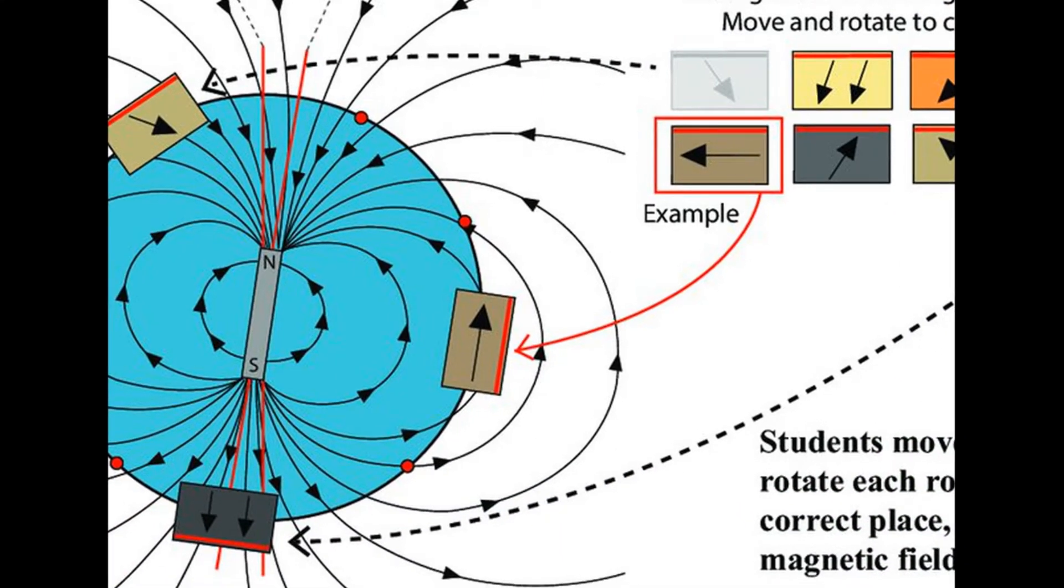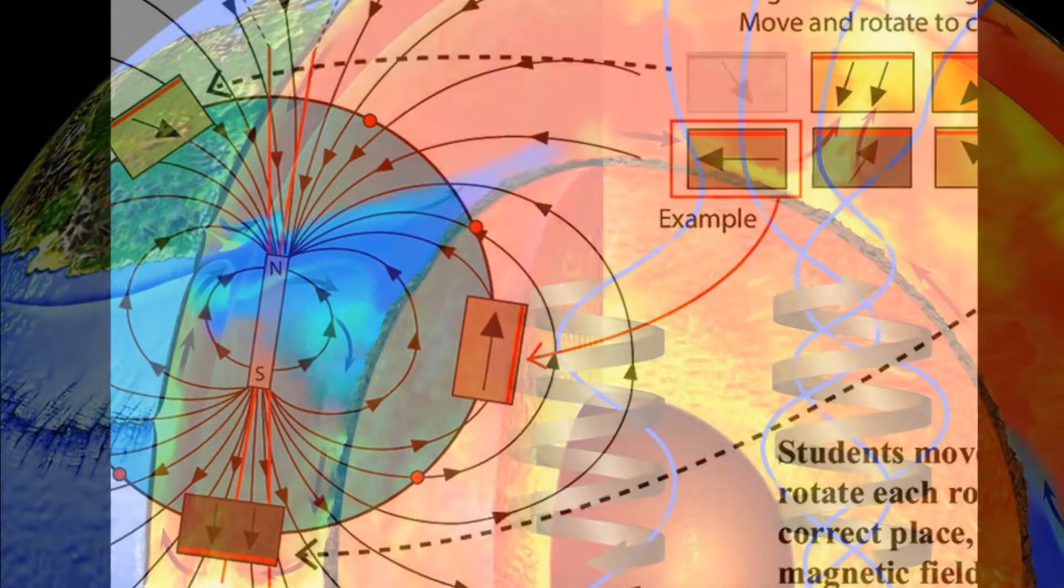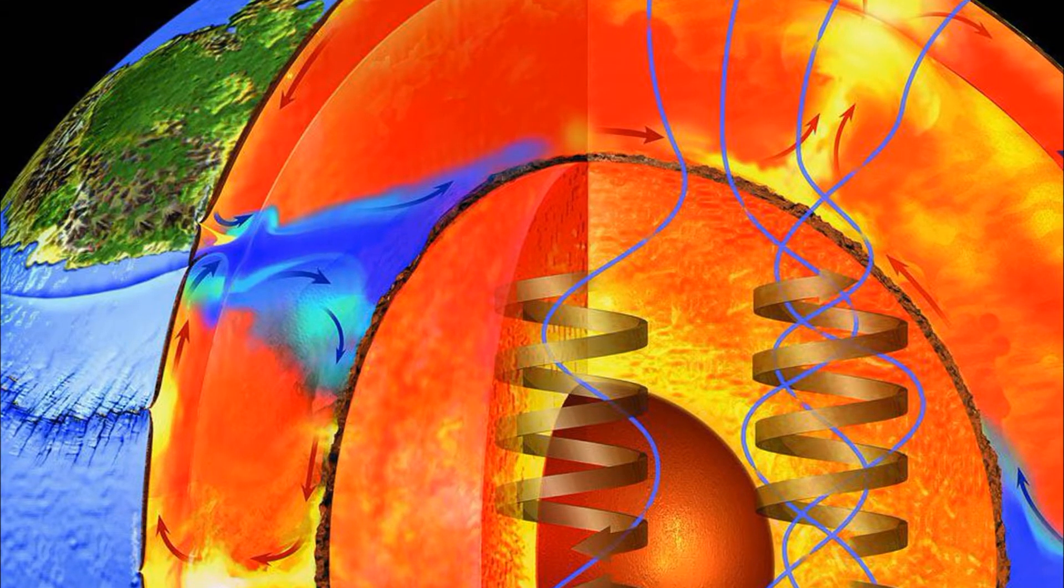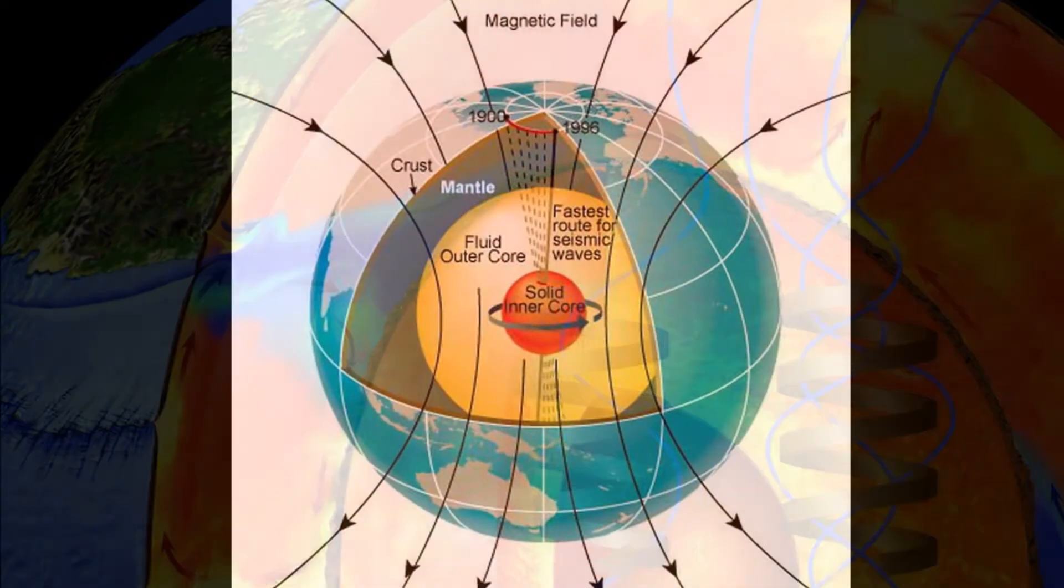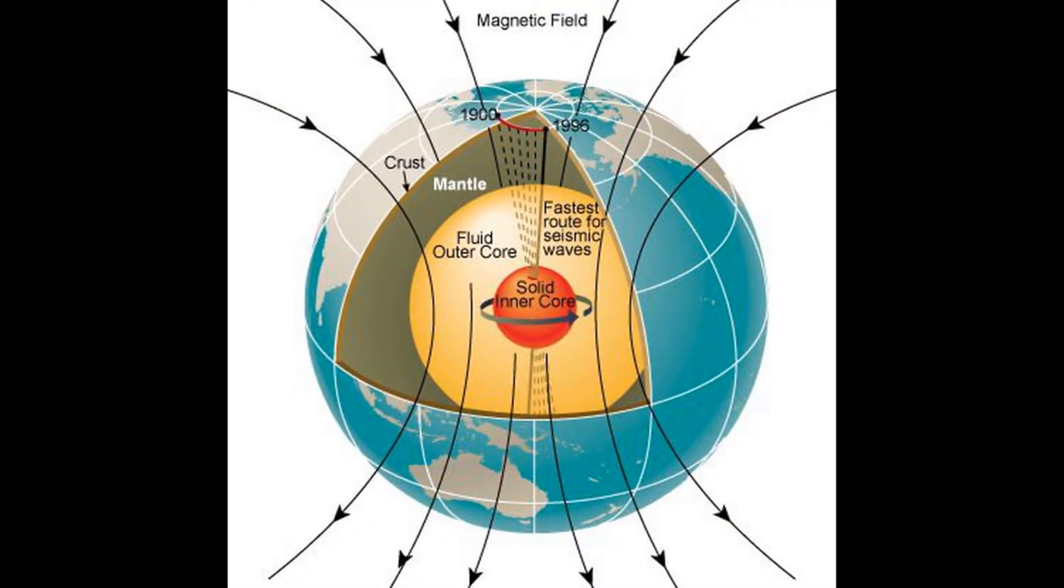Scientists think that the answer to the magnetism of the earth lies in the link between magnetism and electricity. They believe that the rapid spinning of the earth creates electric currents in the molten core. These are responsible for the magnetic field around the earth.